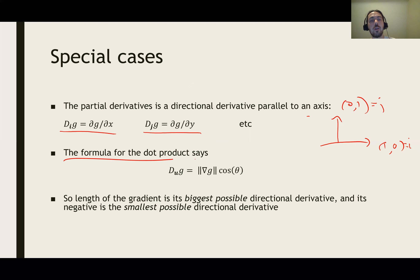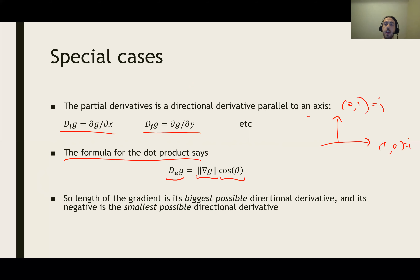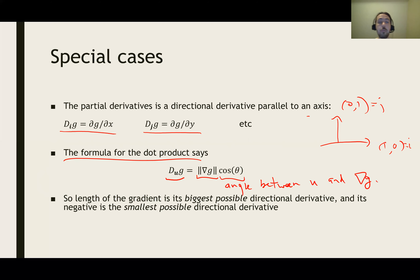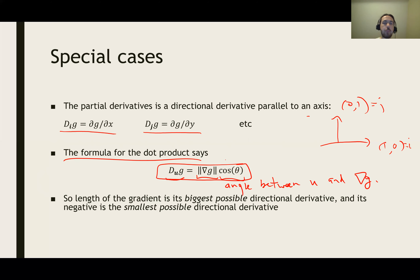The dot product formula in terms of the lengths of two input vectors and the angle between them says that the directional derivative is given by the length of the gradient times the cosine of the angle between our vector u and the gradient vector. Since cosine of any angle is always between -1 and 1, the biggest possible value the directional derivative could have is equal to the length of the gradient.